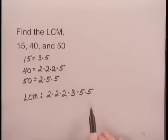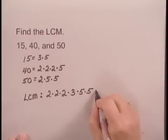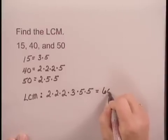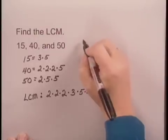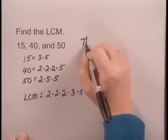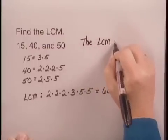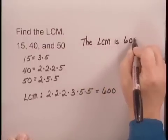So this is the least common multiple, and if we multiply this out, we get 600. The LCM is 600.